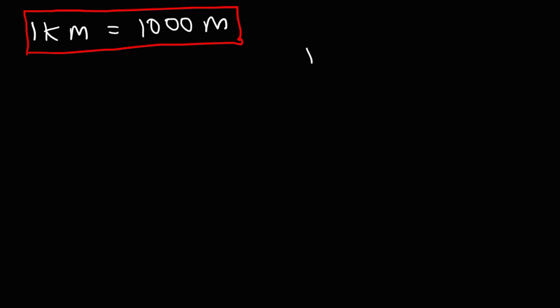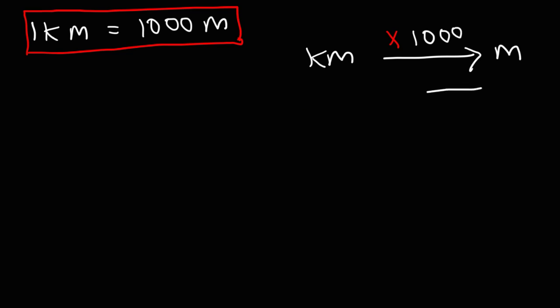If you have kilometers and you want to convert to meters, the quick and simple way is to multiply by a thousand. If you have meters and you want to convert to kilometers, then you should divide by a thousand.